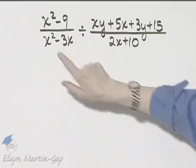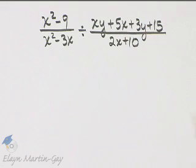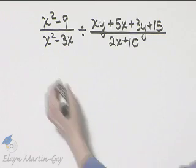The operation is division, so it's the first rational expression times the reciprocal of the second rational expression. As I do this, I'm going to go ahead and start factoring because that will help us when we simplify.